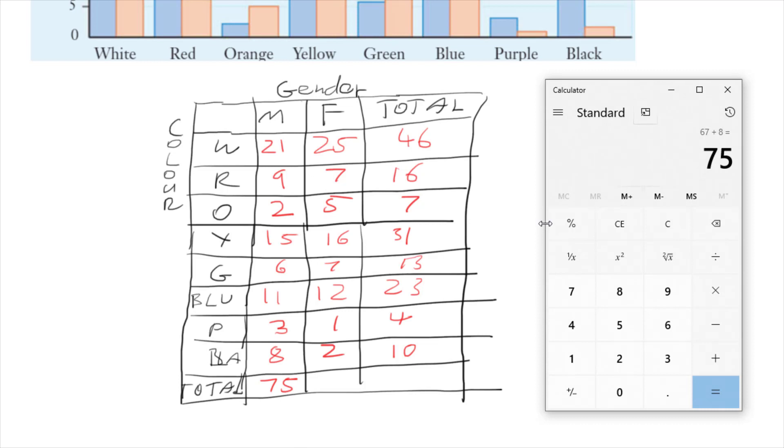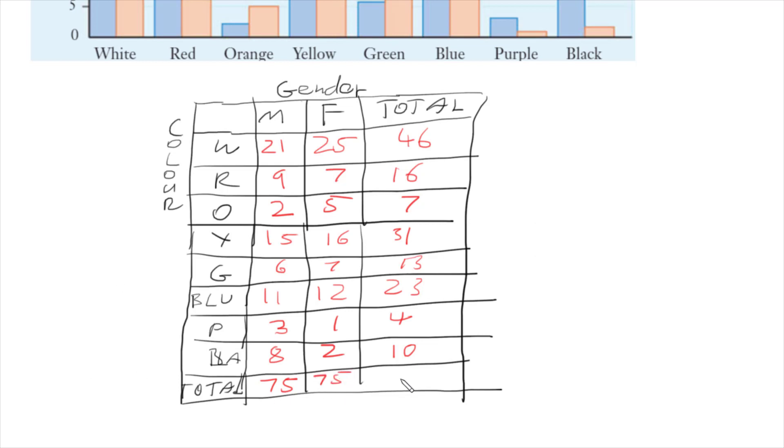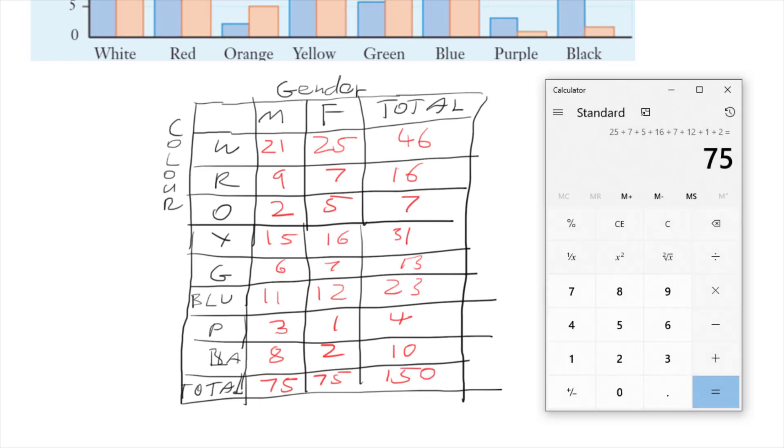And for the females we've got 25 plus 7 plus 1 plus 2, giving us 75 females. So we should have 150 in total. I'm going to check my totals just to be sure: 46 plus 16 plus 16 plus 10, and we get 150, so we haven't made an error.